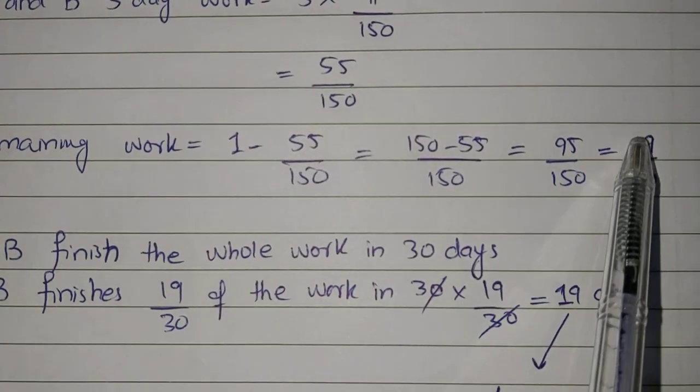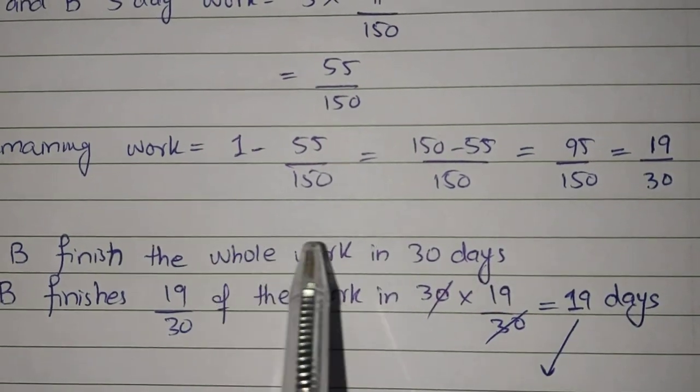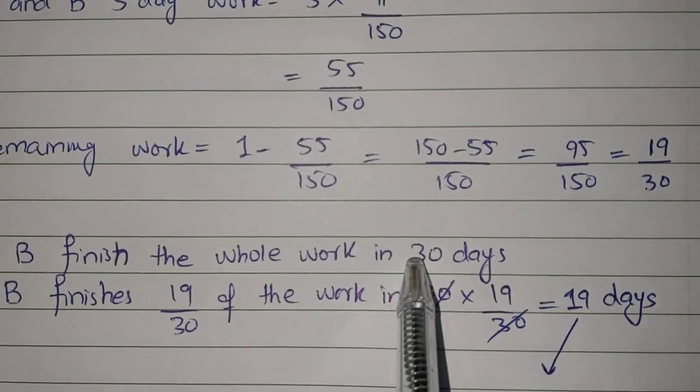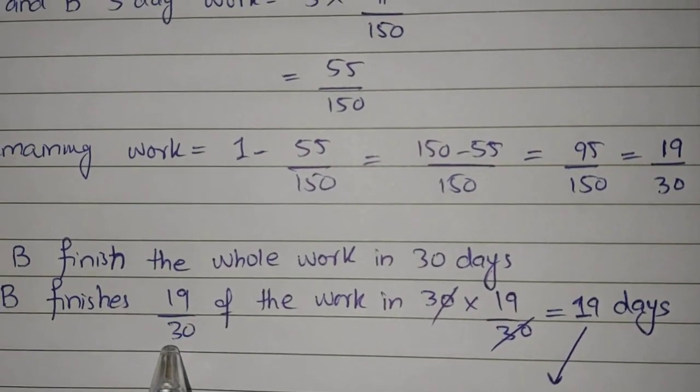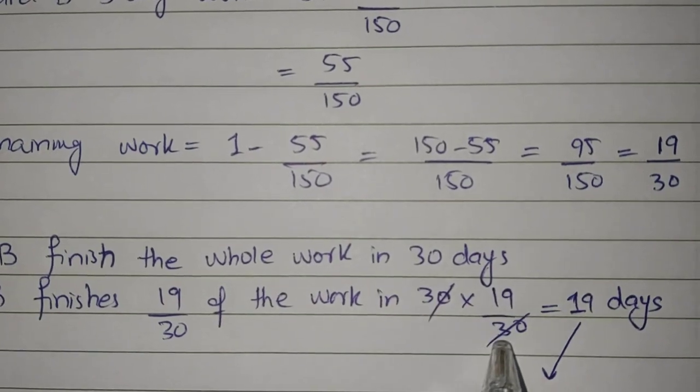Remaining work is 19/30. And B completes the whole work in 30 days. So in how many days will B finish 19/30? 30 times 19/30, which gives us 19 days.